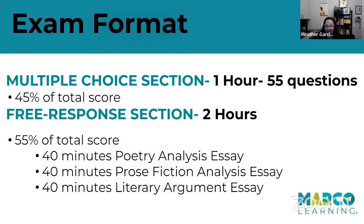Then you dive into the free response section. Have your favorite pens with you — multiple of them. 55% of your total score comes from the three essays. If you distribute equally, you'd spend 40 minutes on poetry, 40 on prose, 40 on the literary argument — though adjust as prose passages can run longer. And you don't have to write in the order the questions are presented. If you want to start with question three because you have a novel fresh in your head, go for it. Start with your strength.